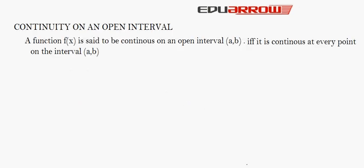First, we will see continuity on an open interval. A function f(x) is said to be continuous on an open interval (a, b) if and only if it is continuous at every point on the interval (a, b). This is similar to saying a function is continuous at each point of its domain. Continuity on an open interval is the same as the continuous function — it should be continuous at each and every point on its domain.